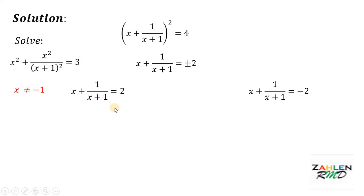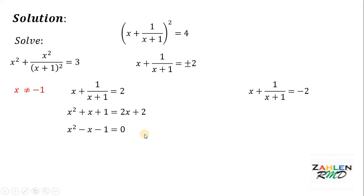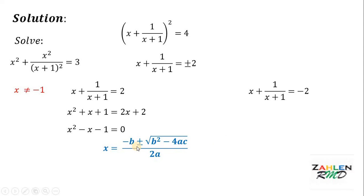For the first case, to clear the denominator, multiply the whole equation by x plus 1. We get x squared plus x plus 1 equals 2x plus 2. Equating to 0 gives x squared minus x minus 1 equals 0. Using the quadratic formula, x equals negative b plus or minus square root of b squared minus 4ac, all over 2a, where a equals 1, b equals negative 1, and c equals negative 1. Substituting gives x equals 1 plus or minus square root of 5, all over 2.